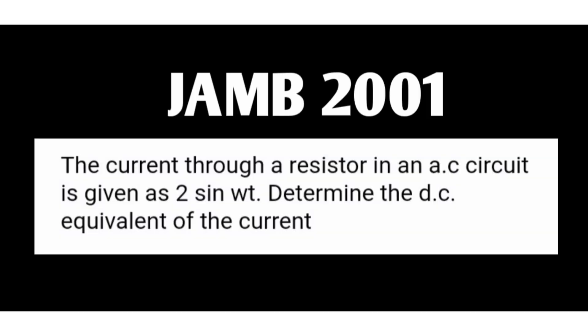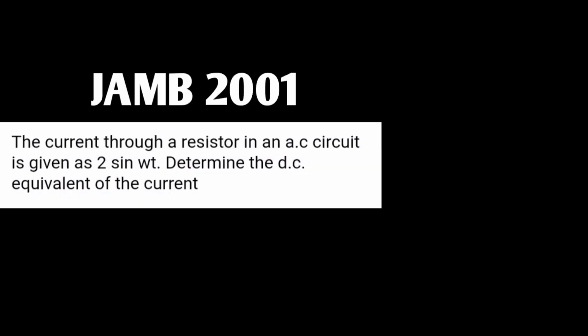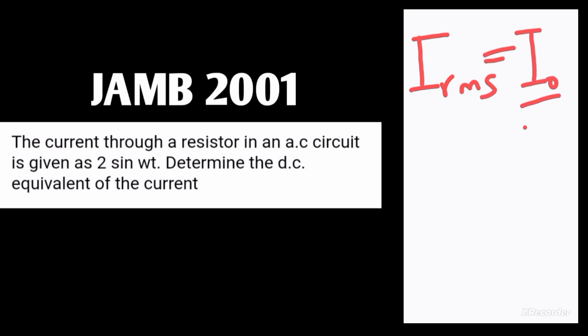Let's take the first example. The current through a resistor in an AC circuit is given as i = 2 sin(ωt). Determine the DC equivalent of the current. The RMS current is related to the peak current by the formula i_rms = i-naught over root 2, and this RMS value of the current is the same as the direct current we are looking for.